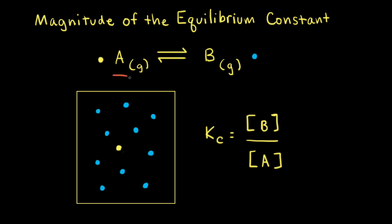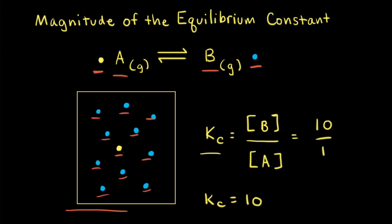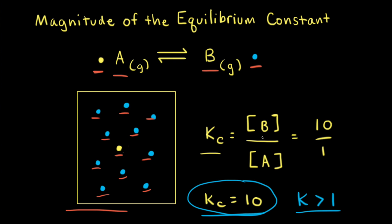Let's look at another hypothetical reaction where gas A turns into gas B. This time gas A is yellow and gas B is blue. Looking at our particulate diagram at equilibrium, there are 10 blue particles and only 1 yellow particle. Plugging into our equilibrium constant expression gives 10 over 1, so Kc equals 10. When K is greater than 1, the numerator is larger than the denominator, meaning we have a lot more products than reactants at equilibrium.